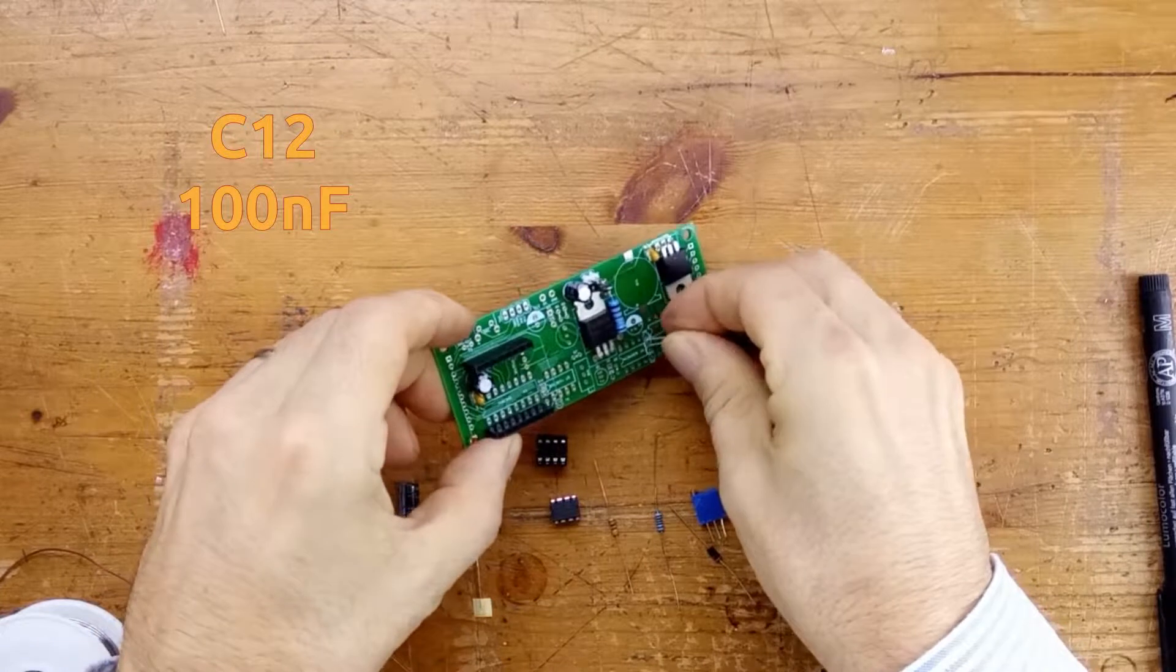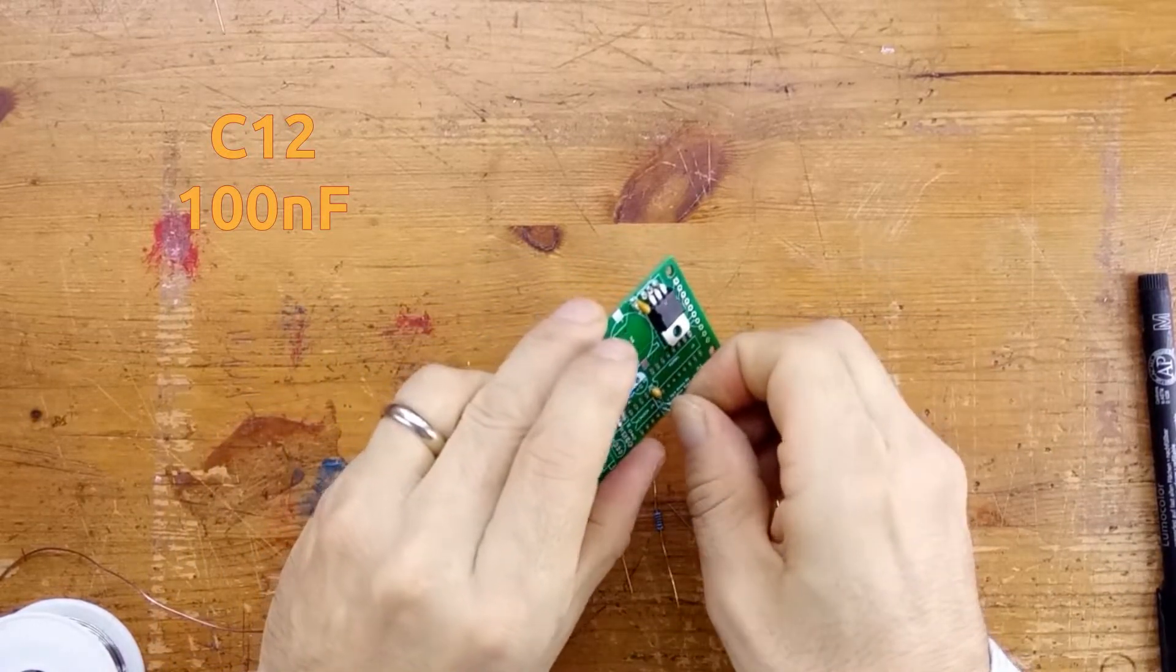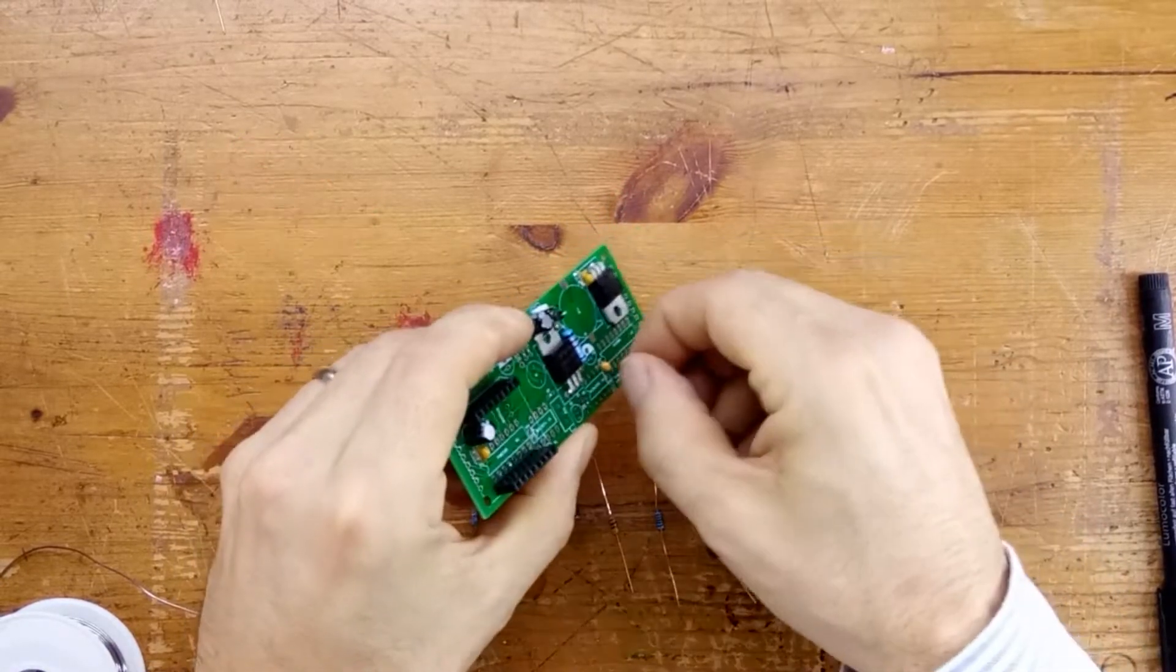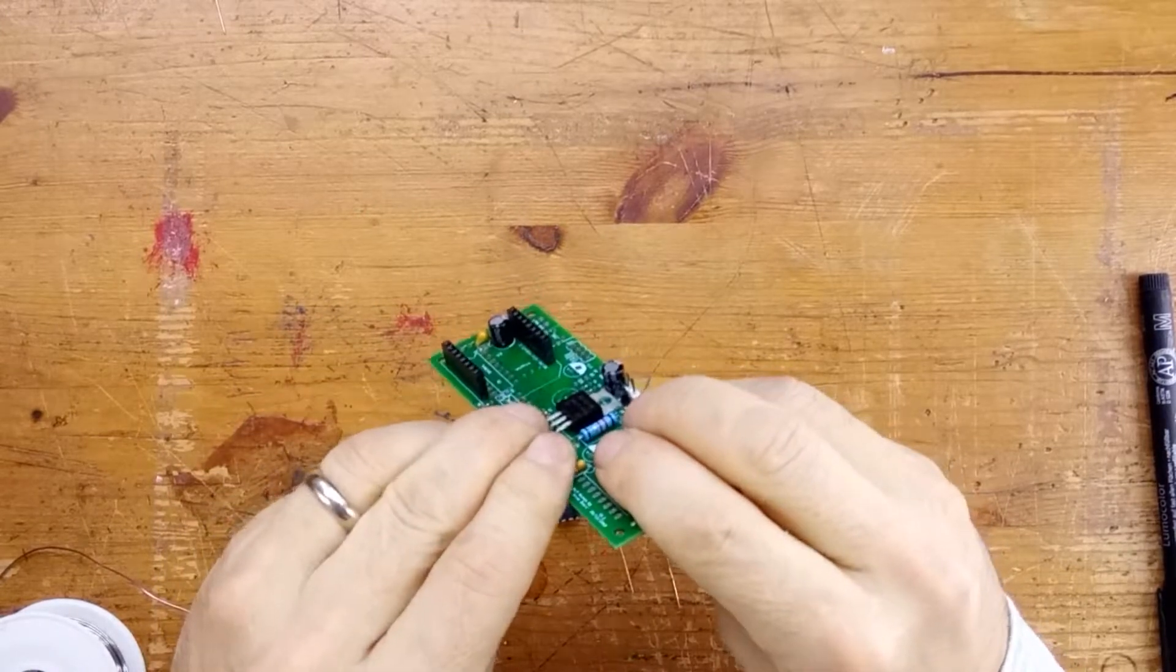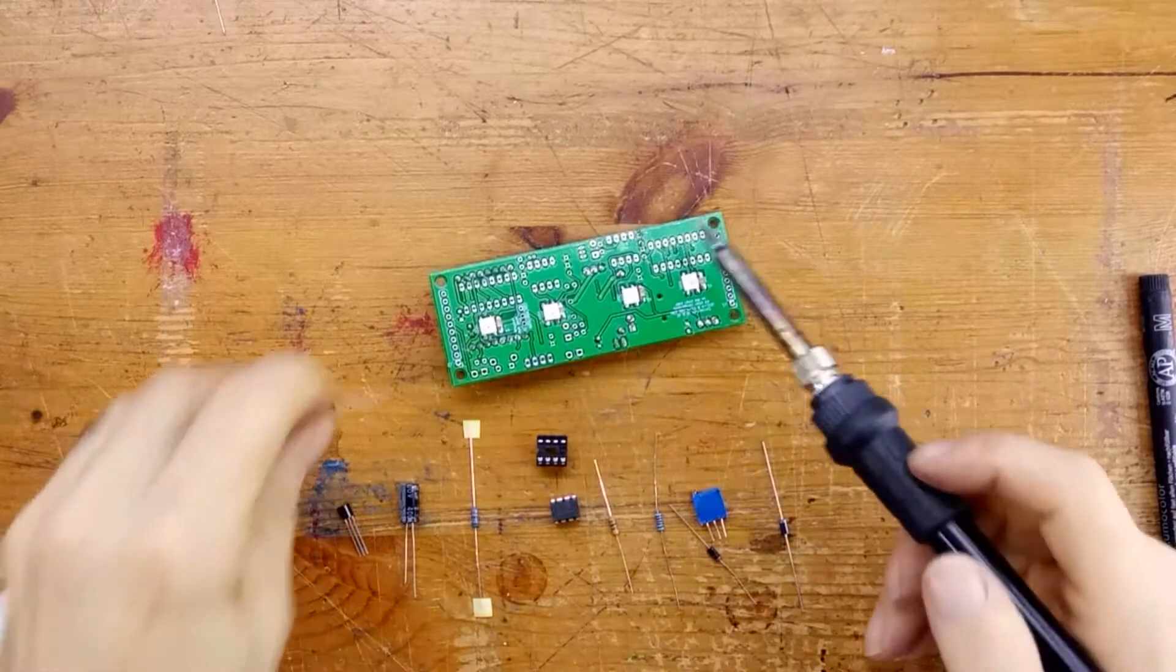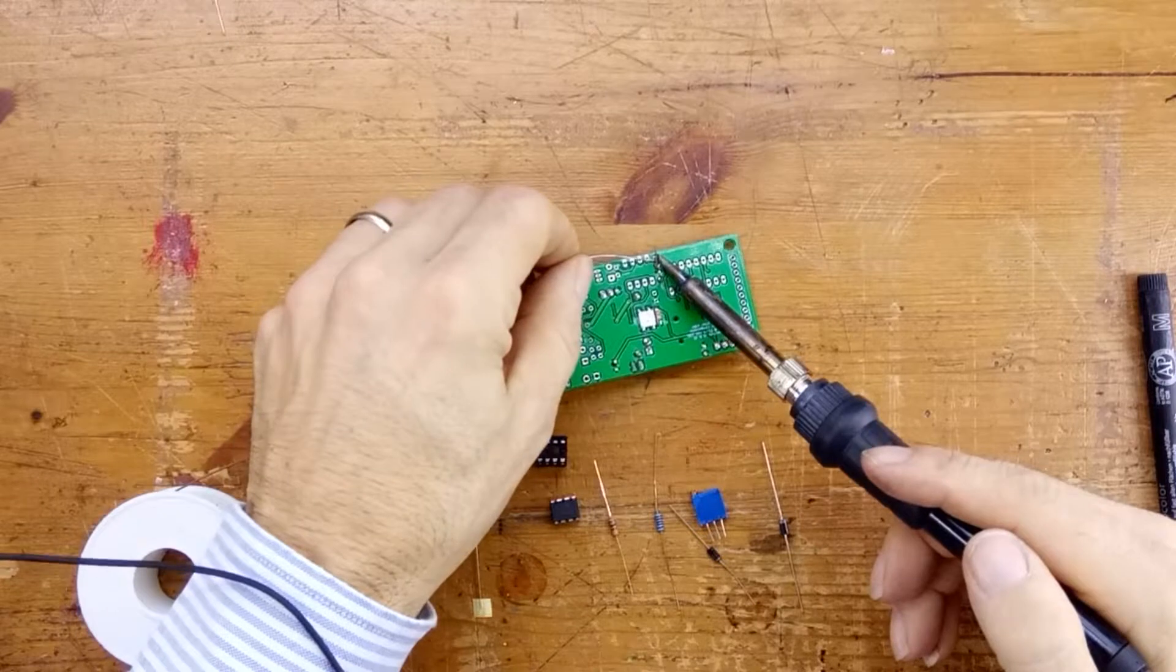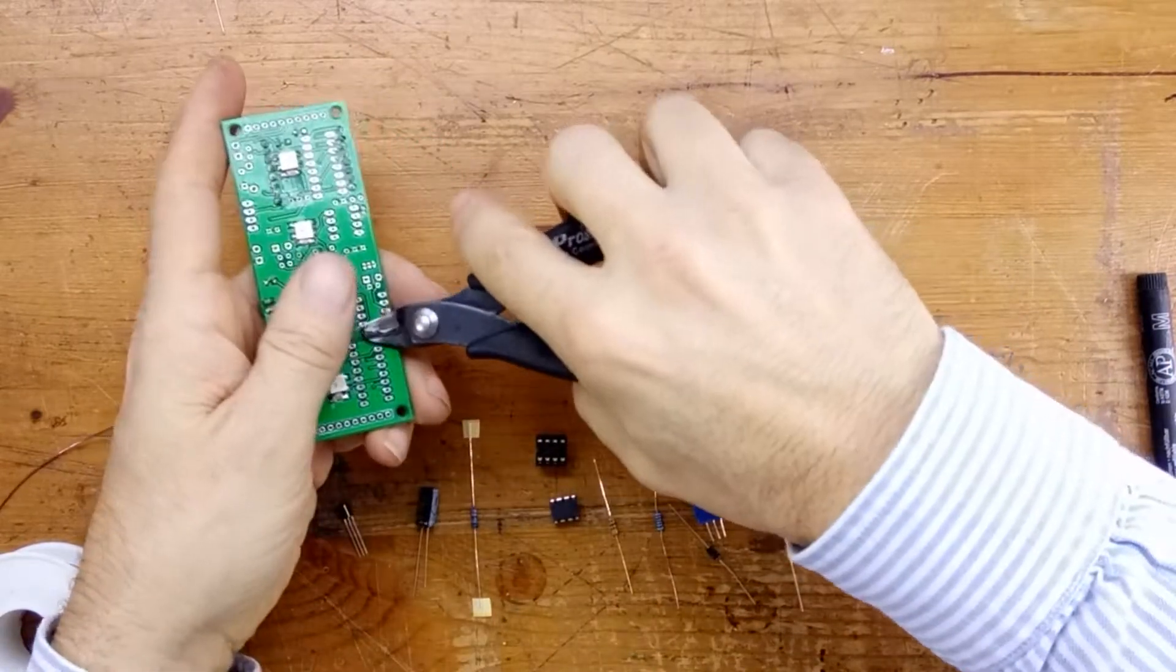Next we're going to put in the two small ceramic capacitors. That's C12 100nF, which has 104 written on it, and C11, which is the 680pF, and that has 681 written on it. Fit them both in at this point. I choose to do it like this quite simply because once the socket and the MC34063 is in place, it's hard or harder to fit these in. Solder them up, looks good, and as usual trim up.